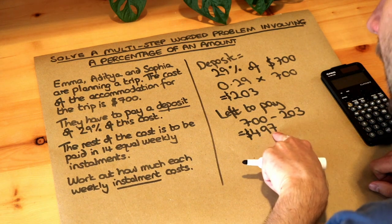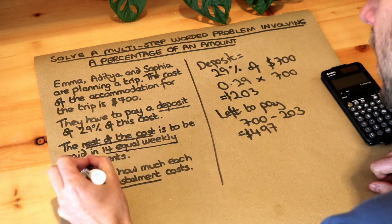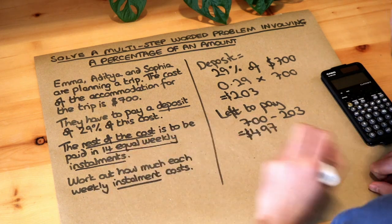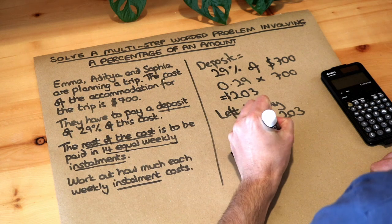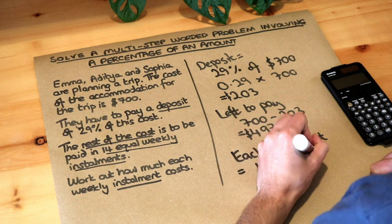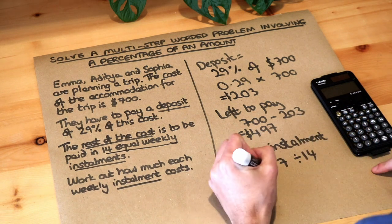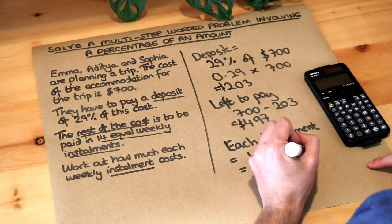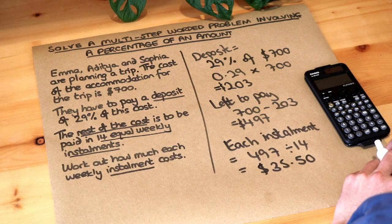We're told that the amount left to pay — the rest of the cost — is broken down into 14 equal weekly installments. So the $497 we've got left to pay is broken down into 14 equal amounts, meaning we just need to divide 497 by 14. Each installment is equal to 497 divided by 14. On my calculator, 497 divided by 14 gives me 35.5 dollars. With pounds and dollars we use two decimal places, so that's $35.50, or 35 dollars and 50 cents.